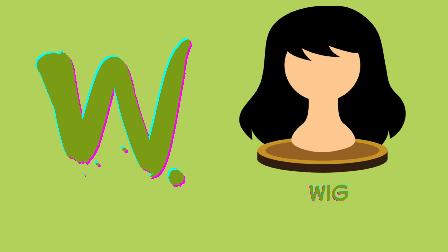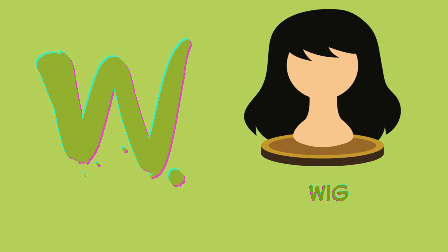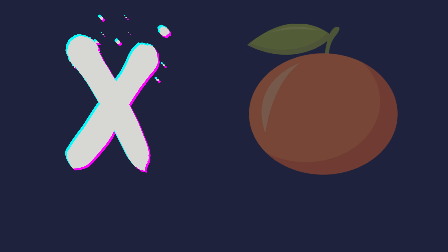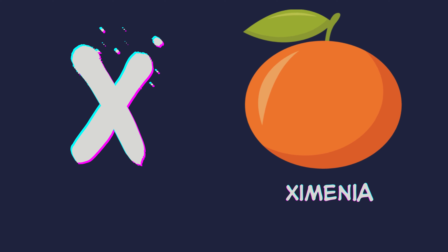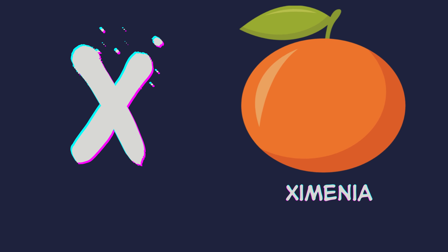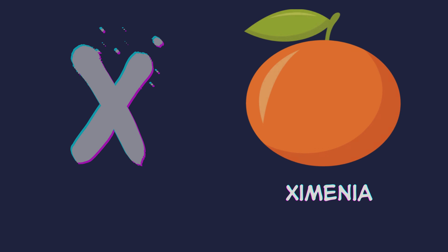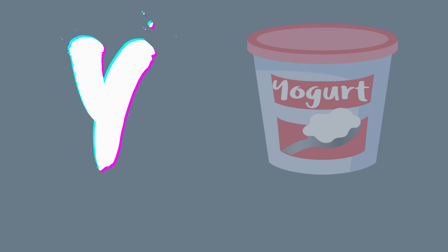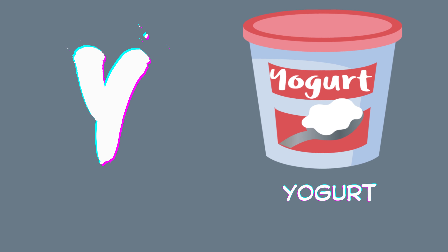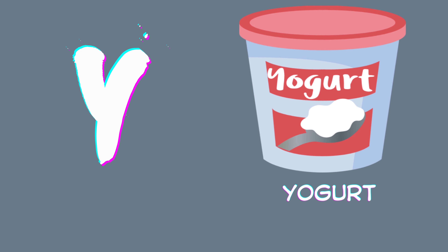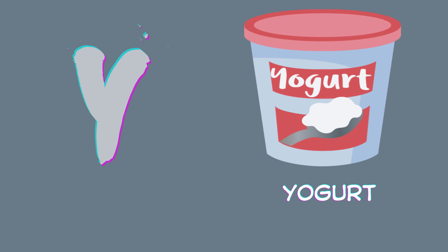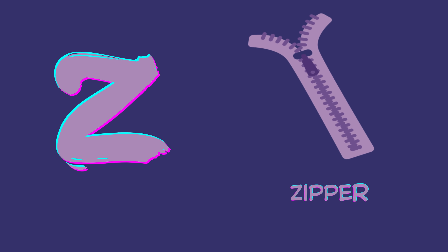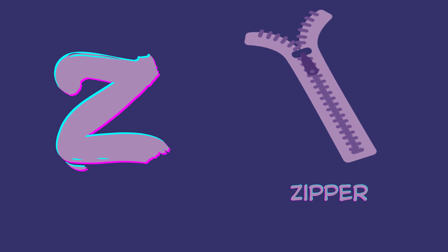W for wig. X for zemenia. Y for yogurt. Z for zipper.